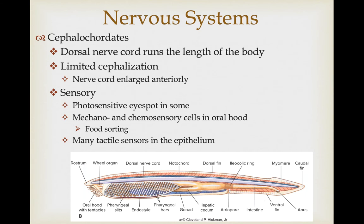The cephalochordates have a well-developed dorsal nerve cord that runs the length of the body parallel to the notochord, but they have relatively limited cephalization. There is a slight enlargement of the nerve cord anteriorly in the head region. As far as sensory structures, some species have photosensitive eye spots, but they're not really vision-forming, and they do have mechano- and chemosensory cells in their oral hood, used for sorting food.